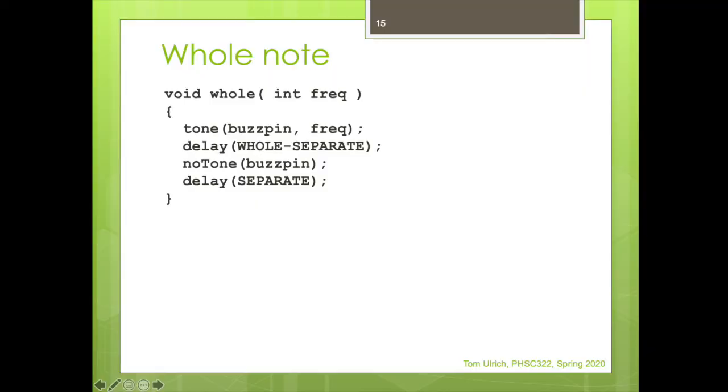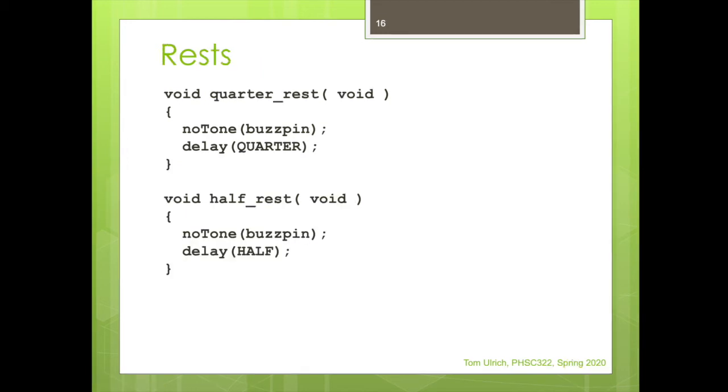And if you wanted a dotted quarter note, you would add the same sort of thing or a dotted eighth note. I mean, I'm sort of giving you a general structure. And as you add, use more and more complexities of music, you're going to add more functions like this. For a whole note, it's the same structure. Set up the frequency, wait whole minus the separate. And then no tone and wait. And if you wanted the slur, you would use the format like we had analogous on eighth note and quarter notes. For the rests, I said, well, a quarter rest is just going to be no tone and delay a quarter. Half rest is no tone and delay a half. If you wanted to do a whole rest, you do delay a half or an eighth rest. The same format would apply.